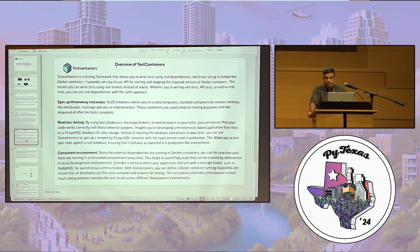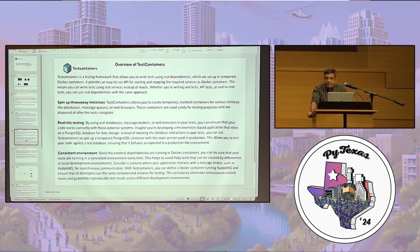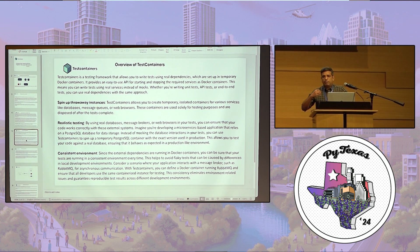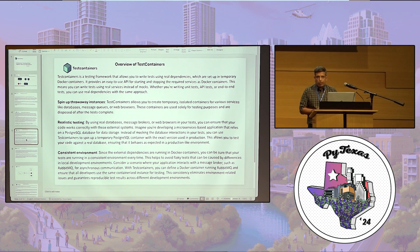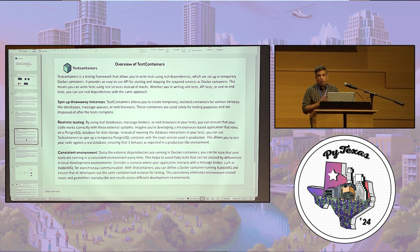That's where Testcontainers comes into the picture. It's a testing framework — a library — that helps us write test cases with real dependencies. These dependencies are available in temporary Docker containers. Testcontainers provides an easy-to-use API that handles spinning up and tearing down those temporary Docker containers, and helps us communicate with those real dependencies. Any test case we write will talk to these real dependencies, whether it's JUnits or integration tests.